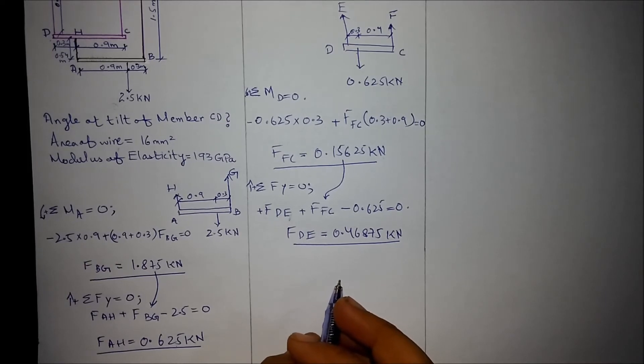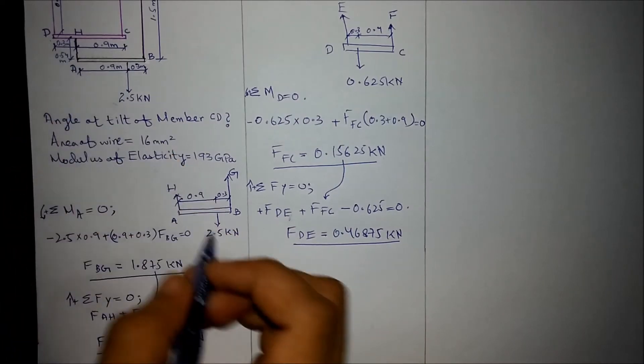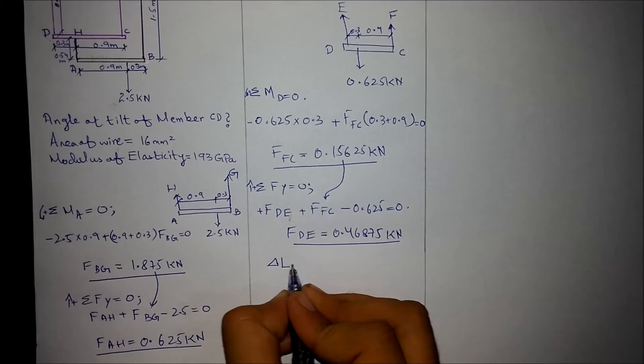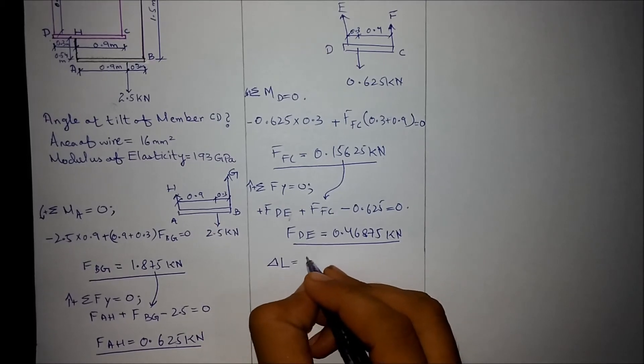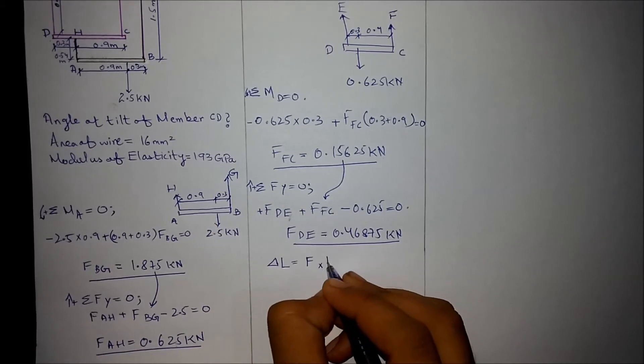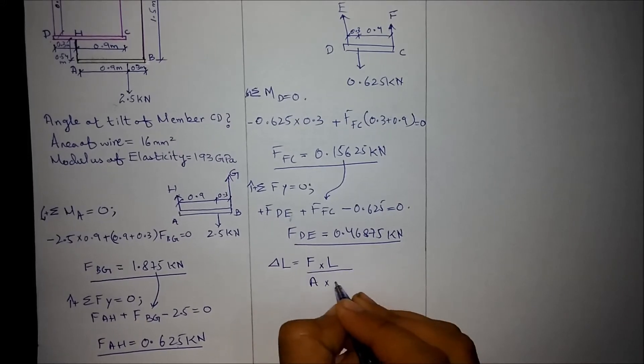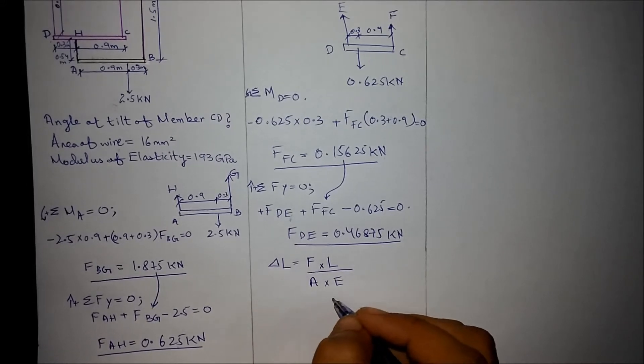For angle of tilt, we simply have to find out the change in length in each of these wires. So we simply apply the equation as delta L is change in length equals force in the wire times the length of that wire upon area of that wire into modulus of elasticity of that wire.